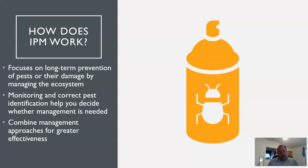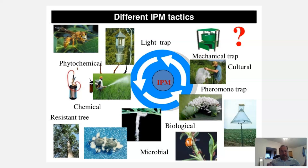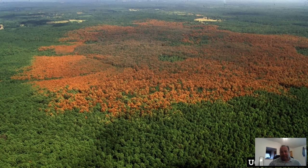IPM is really focused on long-term prevention of pests damaging the ecosystem. You want to monitor, do correct pest identification, and decide whether management is needed. You combine management approaches for greater effectiveness. Tools might include a biological control, pheromone traps, mechanical traps, light traps, phytochemicals, or planting chemically resistant trees — finding what works best for your specific pest.